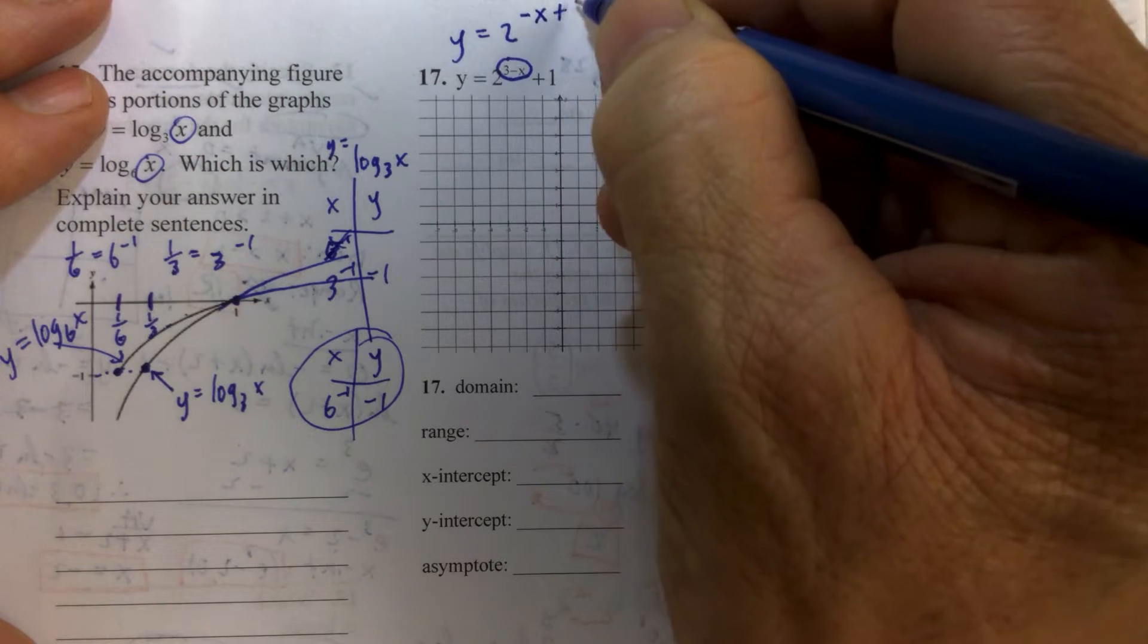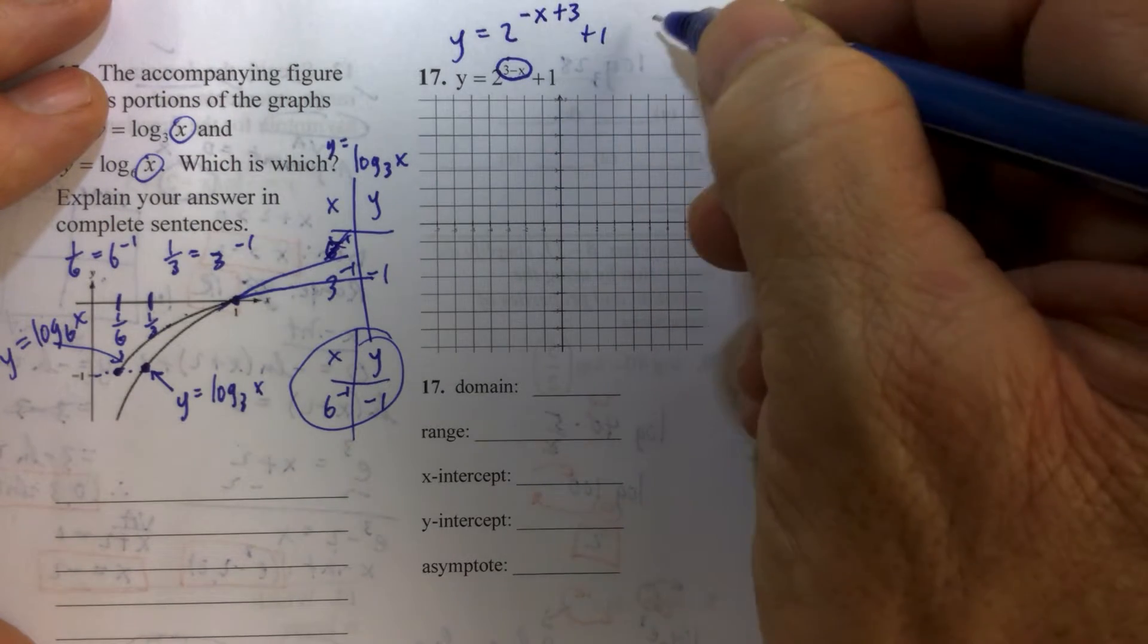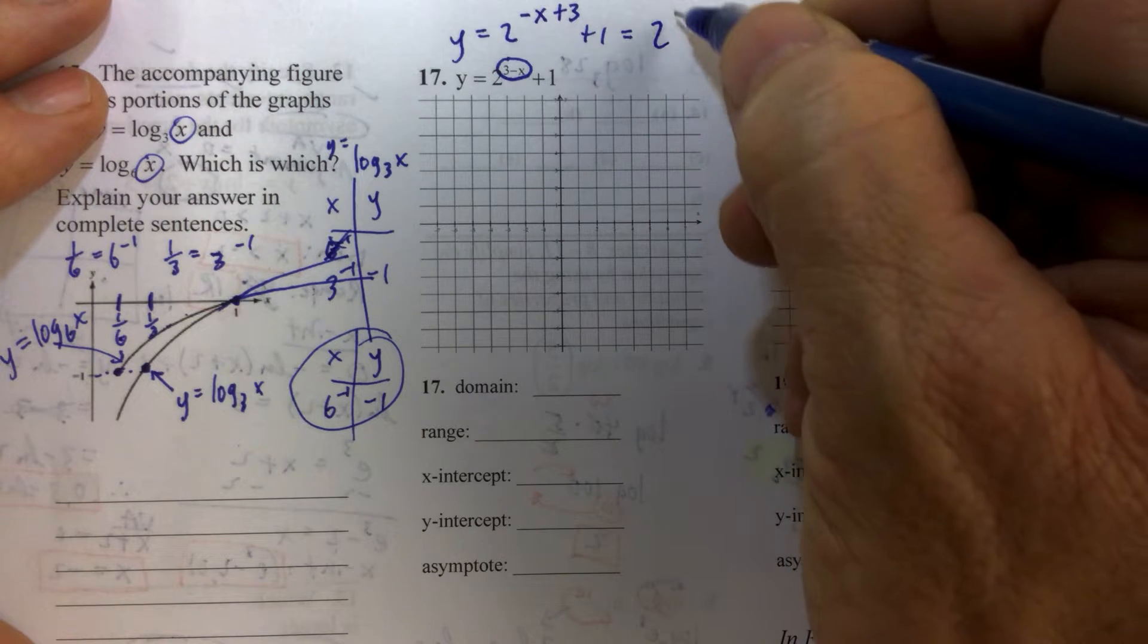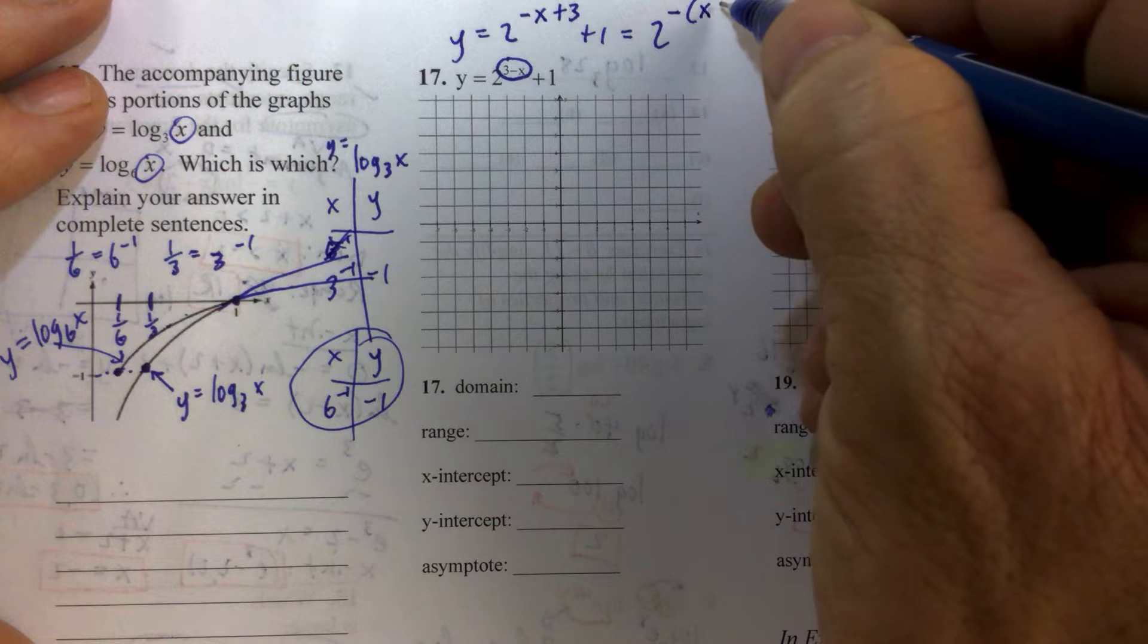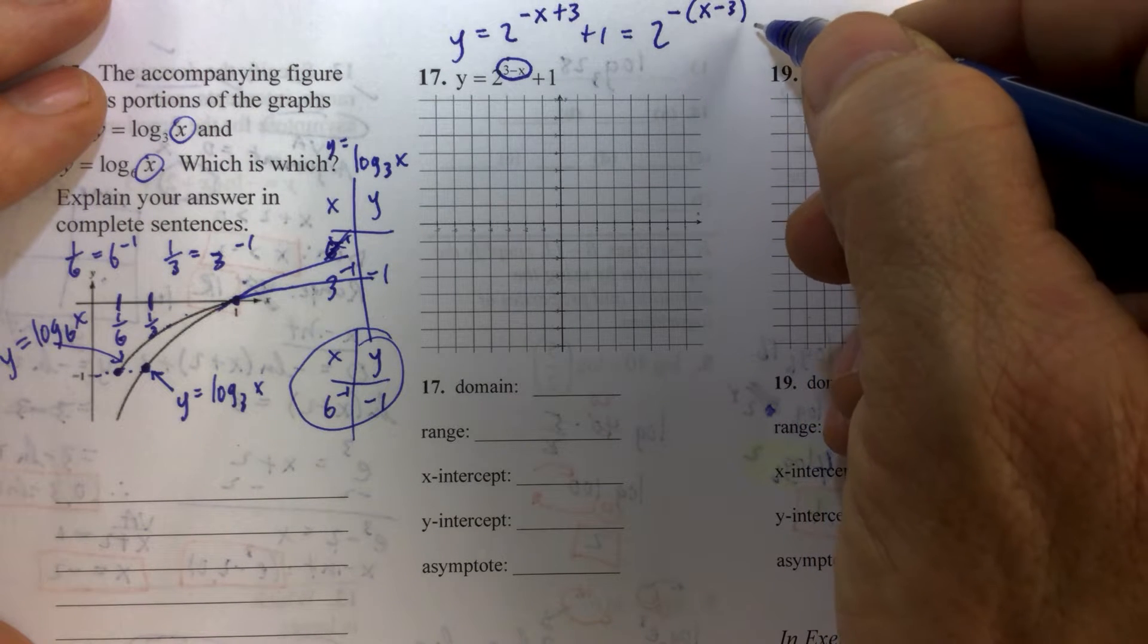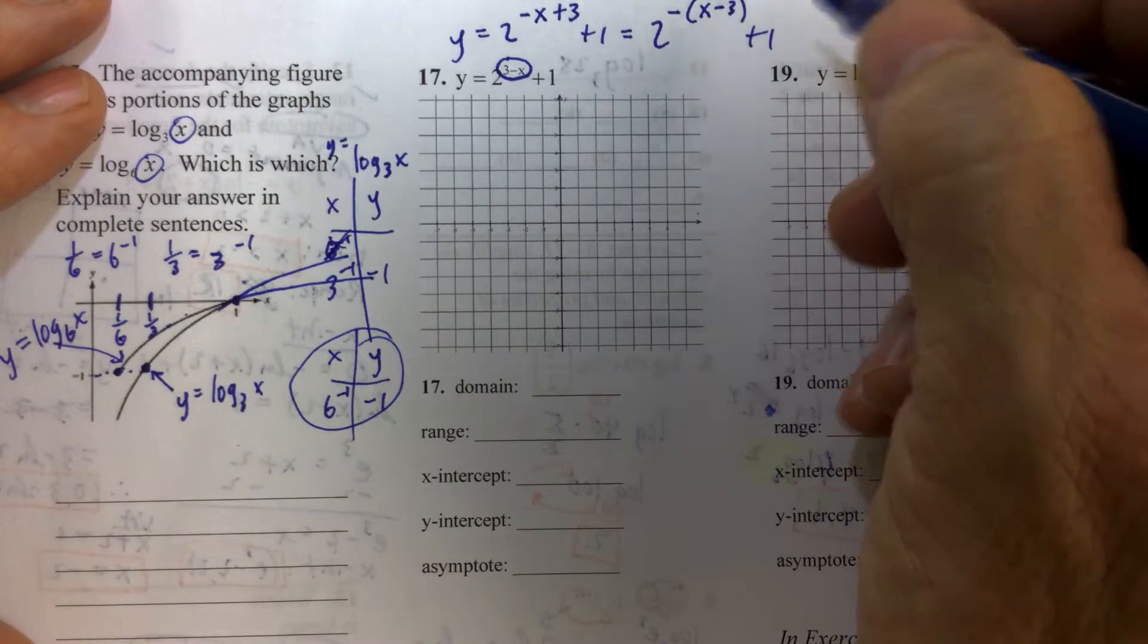The way we want to rewrite this is we want to write this as 2 to the negative x plus 3, plus 1. Here's the tricky part: you're going to factor out a negative and rewrite the exponent as x minus 3, plus 1.